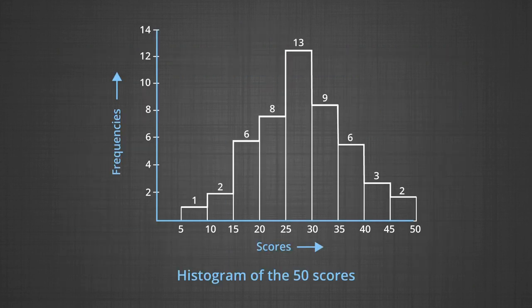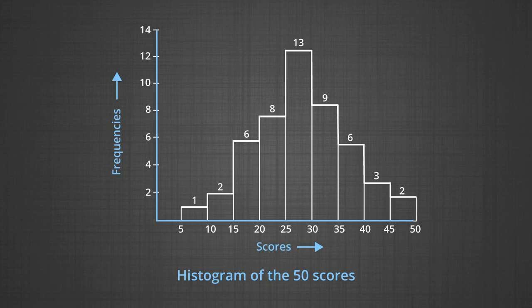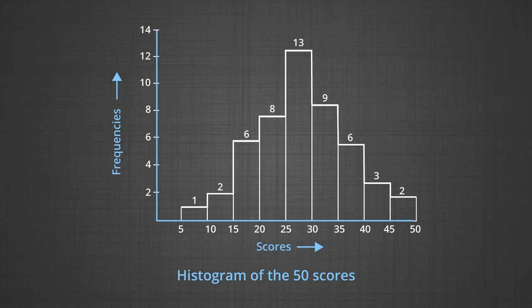In figure one, the baseline is labeled with score intervals rather than exact limits. The first interval begins at 4.5 — the exact lower limit — and ends at 9.5, the exact upper limit. The frequency of one in interval 5 to 9 is represented by a rectangle whose base is the length of the interval and height is one unit on the y-axis. The two scores in interval 10 to 14 are represented by a rectangle of height two y-units. The highest rectangle is on interval 25 to 29, which has a frequency of 13. Numbers written at the top of each rectangle facilitate reading of frequencies, though they are not always necessary.